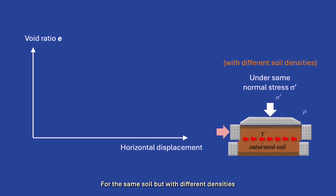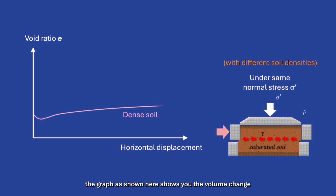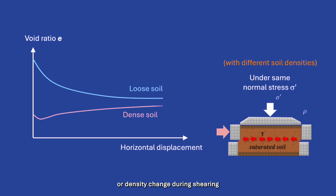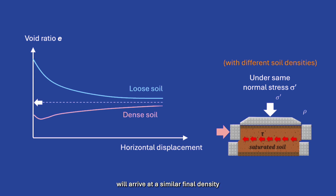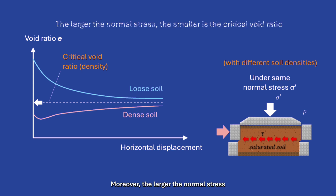For the same soil but with different densities, the graph shows the volume change during shearing of dense and loose soils. Theoretically, near the end of the test, both soils will arrive at a similar final density, which we call critical density or critical void ratio. Moreover, the larger the normal stress, the smaller is the critical void ratio.